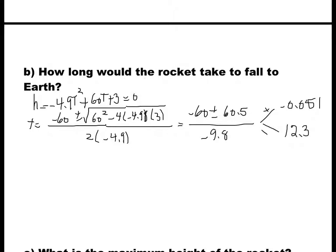Since time cannot be negative, the negative solution is not accepted, so the answer is 12.3 seconds for the rocket to fall to earth.